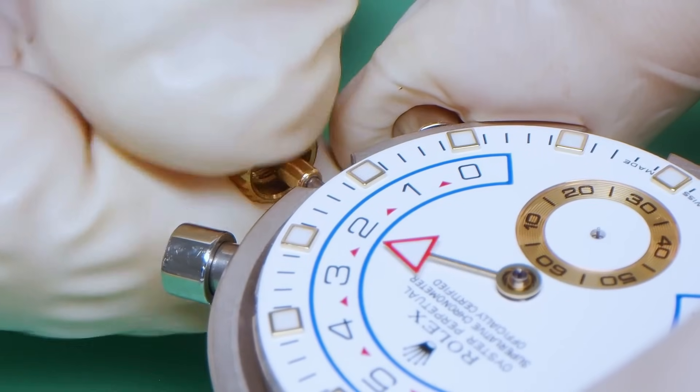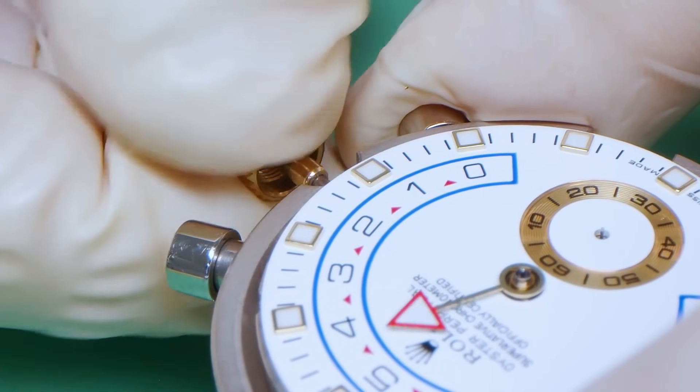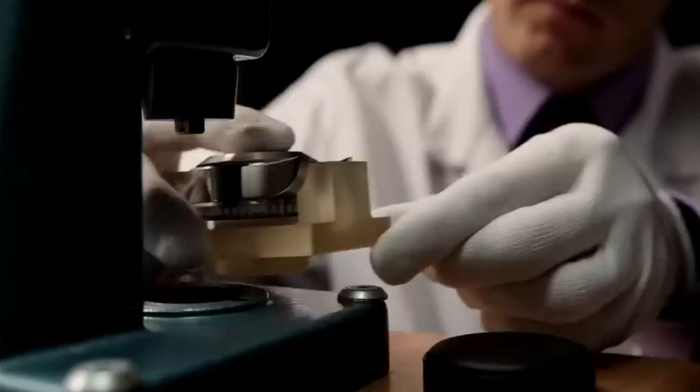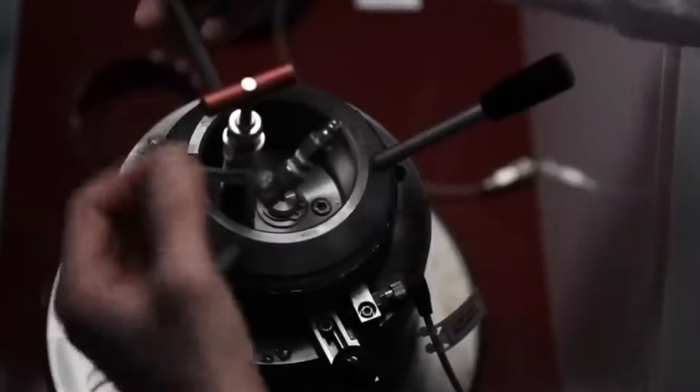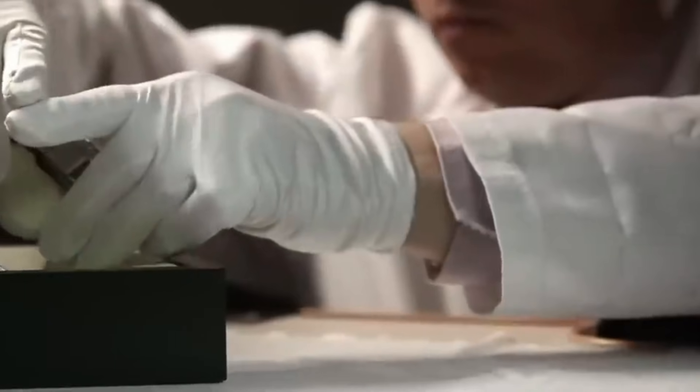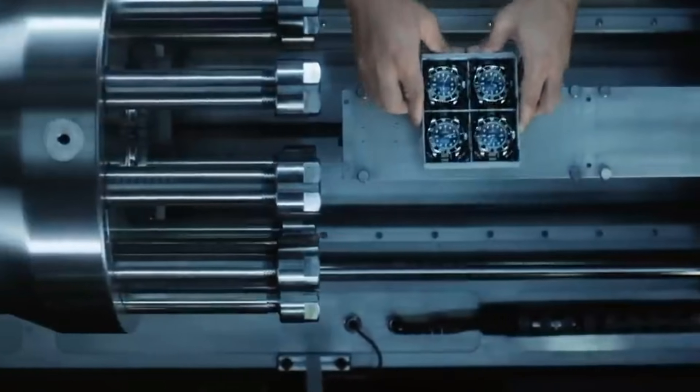The components are ready, but a Rolex isn't born until it proves its metal. At the Geneva headquarters, watchmakers don't just piece together intricate machinery, they create survivors. From chlorine baths to simulated sandstorms, these timepieces face trials that would make most watches tick their last tock. How does Rolex ensure only the fittest watches make it to your wrist?